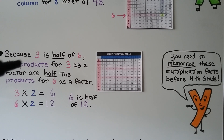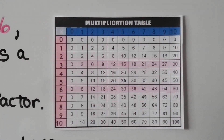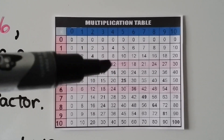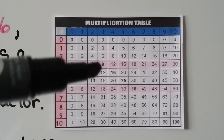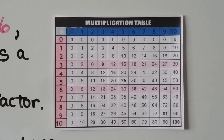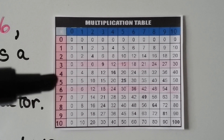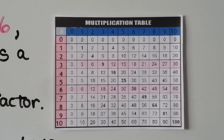Because 3 is half of 6, the products for 3 as a factor are half the products for 6 as a factor. For example, 3 times 2 is 6, and 6 times 2 is 12. Looking at the rows: the products for 3 are 0, 3, 6, 9, 12 — and the products for 6 are double those: 3 is half of 6, 6 is half of 12, 9 is half of 18, 12 is half of 24. We can do the same with 5 and 10, and with 2 and 4, because 2 is half of 4.